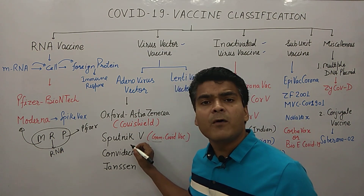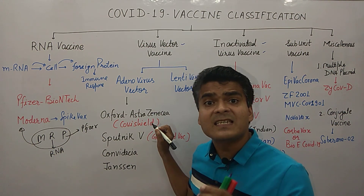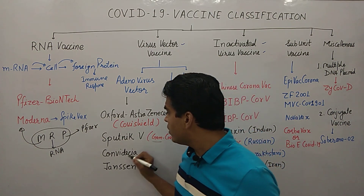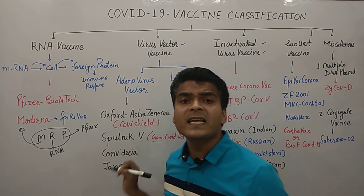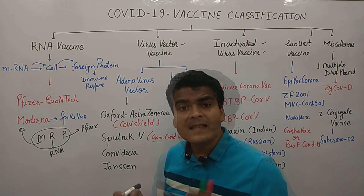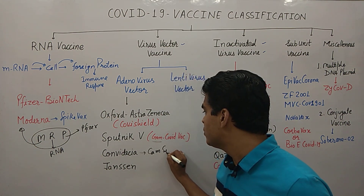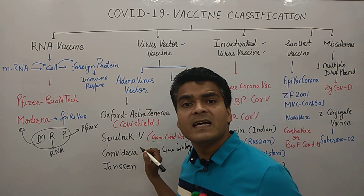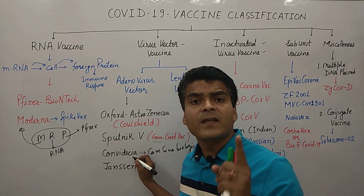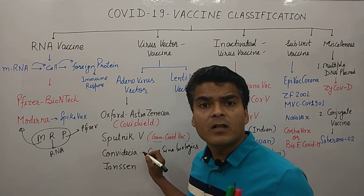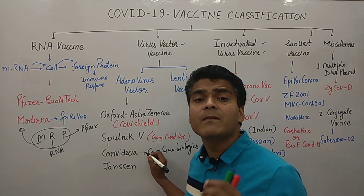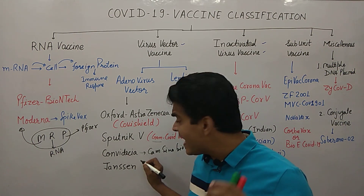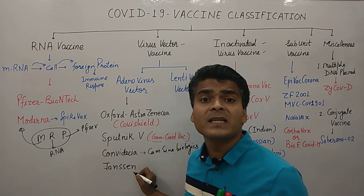Convidecia is developed by the Chinese company CanSino Biologics, and it is given in only one dose by the intramuscular route. Janssen is developed by Janssen, a subsidiary of Johnson & Johnson. Scientists used adenovirus type 26 in the Janssen vaccine, and it is also a single-dose vaccine given by the intramuscular route on the deltoid muscle.